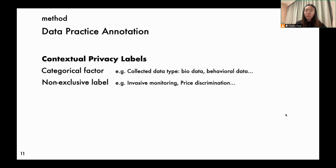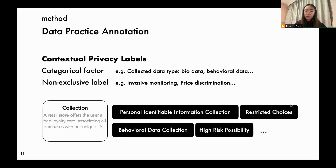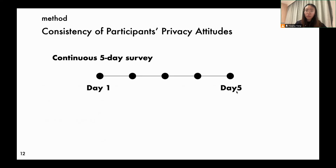We synthesized 18 labels related to privacy contexts. Those labels include categorical factors from the contextual integrity framework, like the collected data type. There are also non-exclusive labels, like price discrimination. As an example here, we used those labels to annotate selected scenarios.